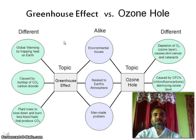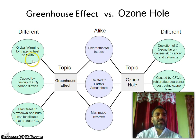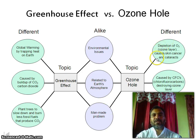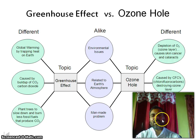Greenhouse effect versus ozone hole: the greenhouse effect involves global warming by trapping heat on Earth, caused by buildup of CO2. Solutions include planting trees and burning less fossil fuel. The ozone hole involves depletion of the O3 ozone layer, causing skin cancer and cataracts, caused by chlorofluorocarbons — addressed by replacing CFCs in AC and refrigerators. Both are environmental issues related to Earth's atmosphere and are man-made problems.